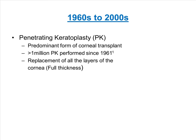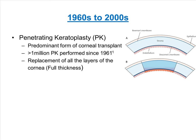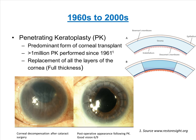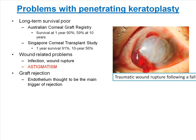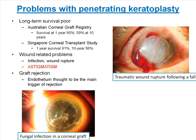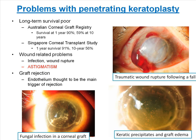Penetrating keratoplasty has been the dominant form of corneal transplant since the 1960s to the early part of the century, restoring vision to many with corneal conditions. However, some of the problems associated with PK include poor long-term survival rates of 50% to 60% at 10 years, wound-related problems such as traumatic wound rupture, infection, and astigmatism, as well as graft rejection.